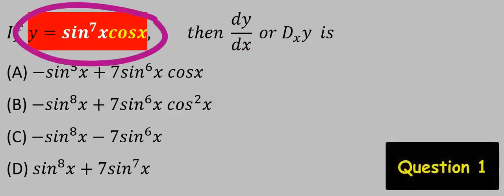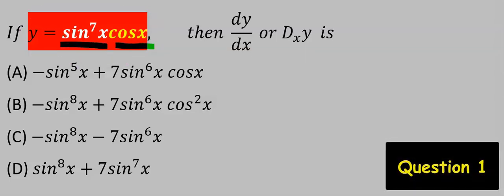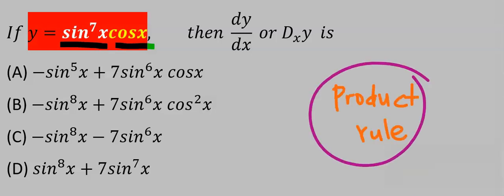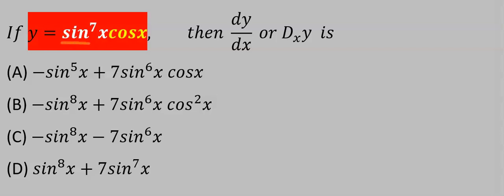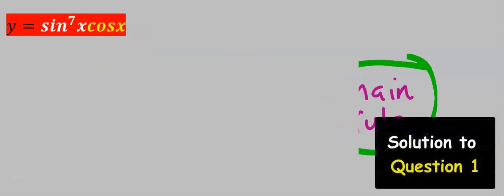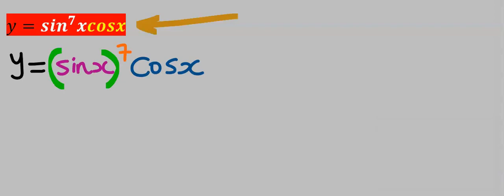Let's consider this function. This is multiplying this, hence we are going to apply product rule. But to differentiate this alone we are going to need the knowledge of chain rule to solve this. Let's rearrange the question.